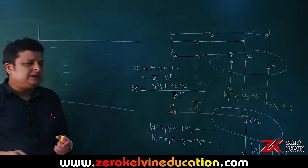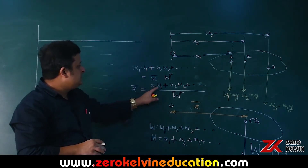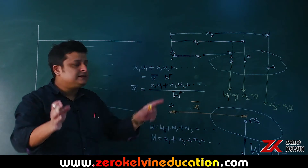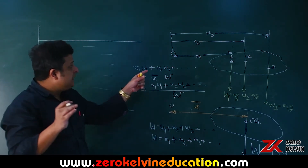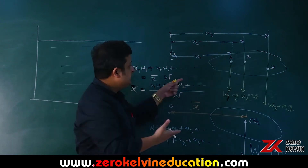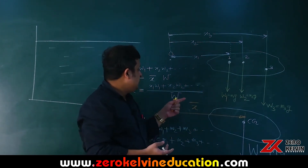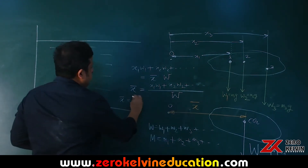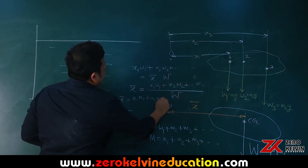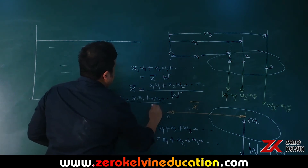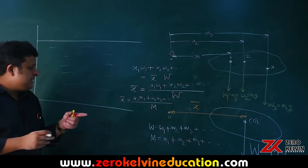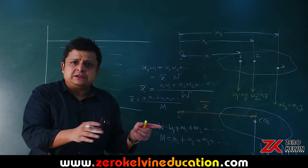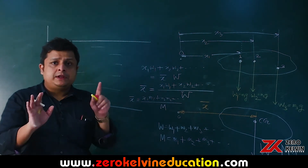Since g is constant, W1 = m1·g, W2 = m2·g, and W = M·g, so g cancels out. Then x̄ = (x1·m1 + x2·m2 + ... ) / total mass. This shows that the distance of the center of gravity equals the distance of the center of mass when g is constant. If the body extended from Earth to the Moon, g would not be constant, but for normal cases CG equals CM.